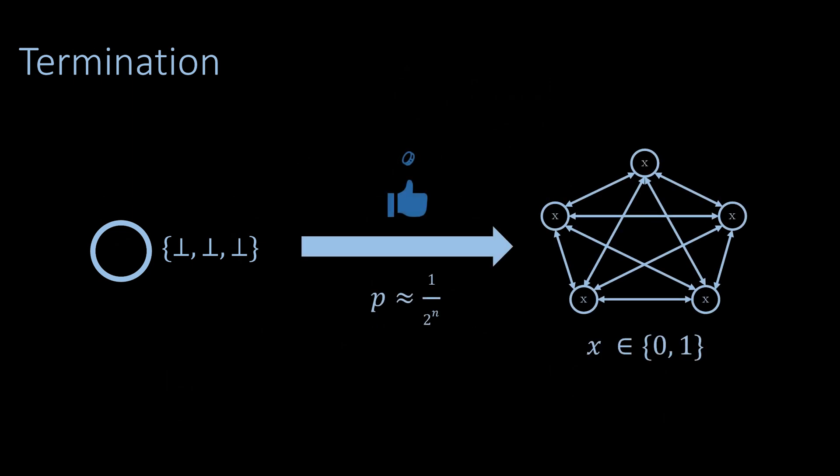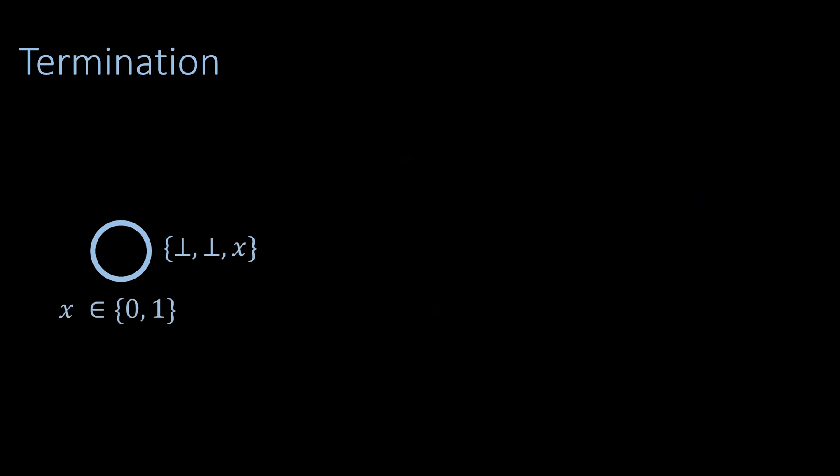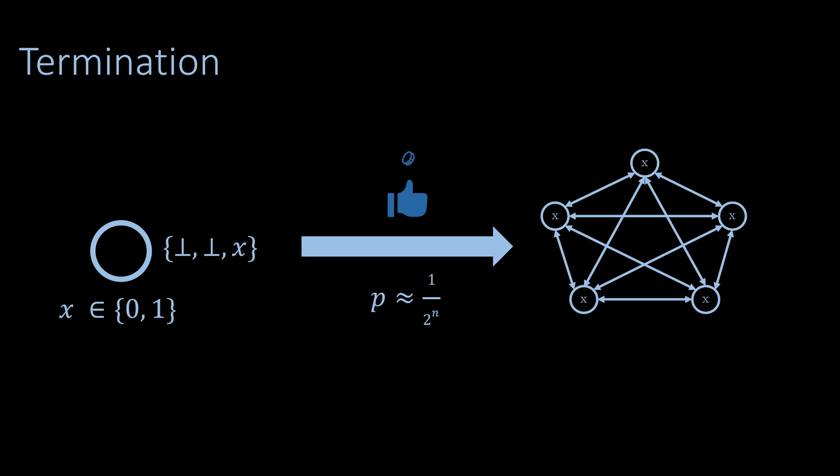The termination property is interesting. If there is no proposal because no node receives only zeros or ones, then all nodes randomly choose a new value. It is possible that all nodes choose the same value by chance — this probability is 1 over 2 to the power of n for n nodes. What if some nodes did receive a proposal? As discussed, there can only be a proposal for zero or one, not both. In that case it is still possible that all other nodes randomly choose exactly the right value, so again all nodes will have the same value with probability at least 1 over 2 to the power of n.